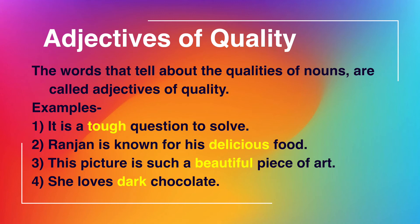Another example: 'Ranjan is known for his delicious food.' Here we are talking about food, and the word 'delicious' tells us the quality — how the food is. So 'delicious' is the adjective of quality. Similarly, 'This picture is such a beautiful piece of art' — 'beautiful' describes the picture, so 'beautiful' is the adjective of quality.